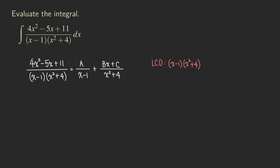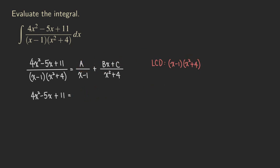So we are getting 4x squared minus 5x plus 11. Now, what about the right-hand side? When we take this first fraction and multiply by x minus 1 times x squared plus 4, the x minus 1 factors will get canceled. So we are left with just the A times x squared plus 4.